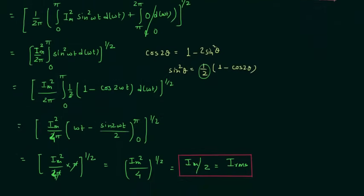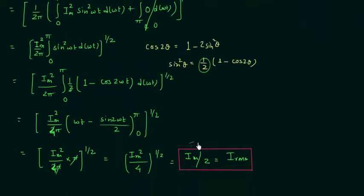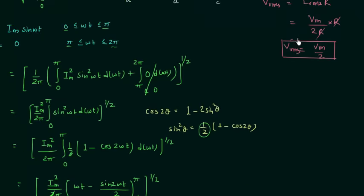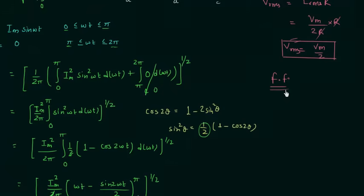I hope you now know how to obtain the RMS value of load current and RMS value of load voltage. I will end this lecture here. In the next lecture we will find out the value of form factor for the half wave rectifier circuit — a very important parameter. First we will see what form factor is, then we will find out its value based on the definition. See you in the next one.